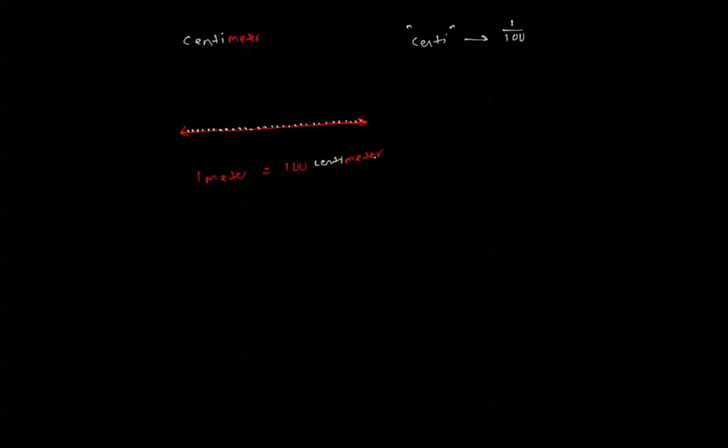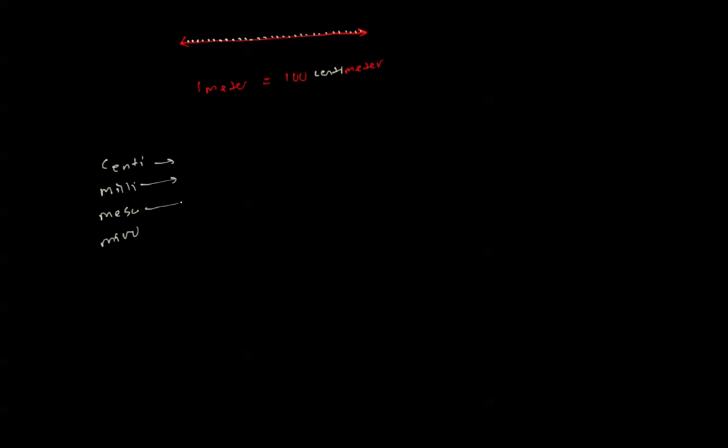So now that you kind of understand this, this example only pertains to length. Let me show you a couple more of what I'm talking about. So centa is one of the prefixes. Milla, mega, micro. Let me just go ahead and tell you these before I run out of time. Centa means one out of a hundred. Milla is one out of one thousand. Mega is actually just a million. Micro is one out of a million.